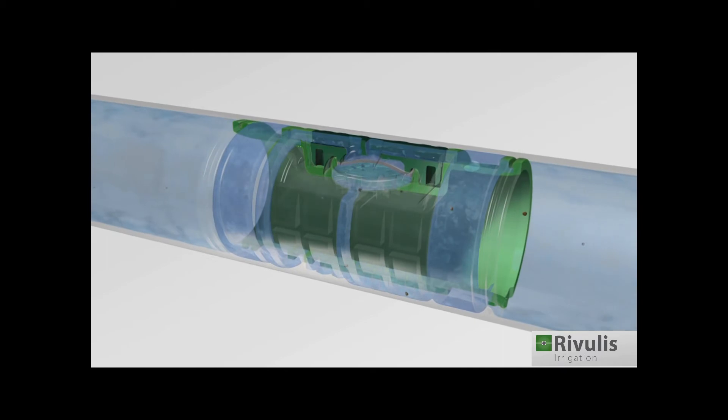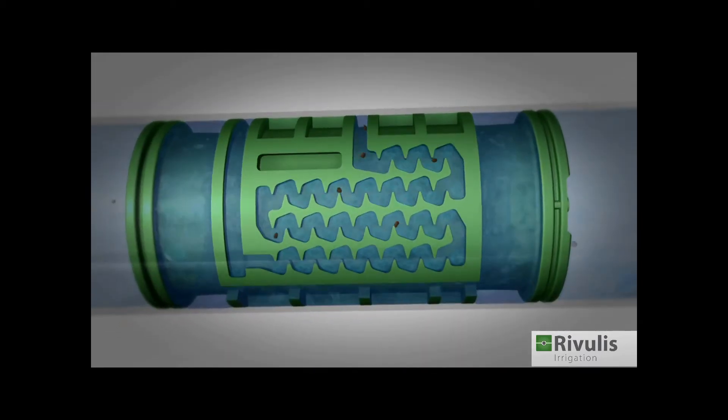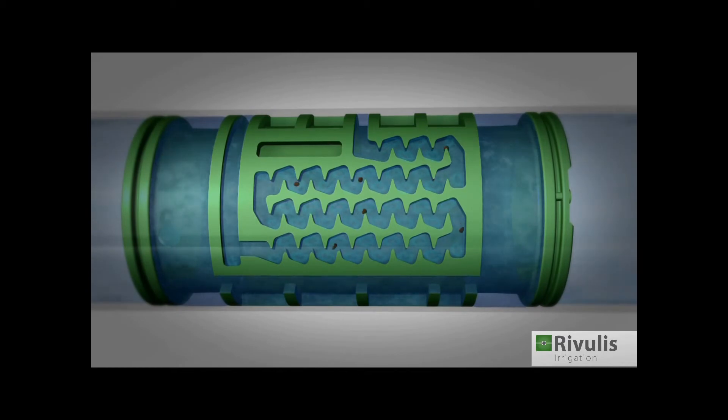Irrigation water usually contains dirt particles. The inlet filter only enables small particles to pass through. The turbulent water flowing through the labyrinth carries the dirt particles with it.